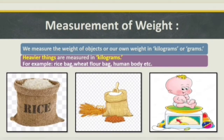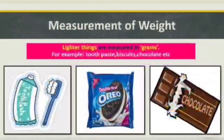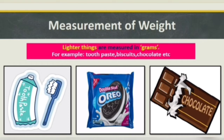Heavier things are measured in kilograms. For example, rice bag, wheat flour bag, human body, etc. Lighter things are measured in grams. For example, toothpaste, biscuits, chocolate, etc.